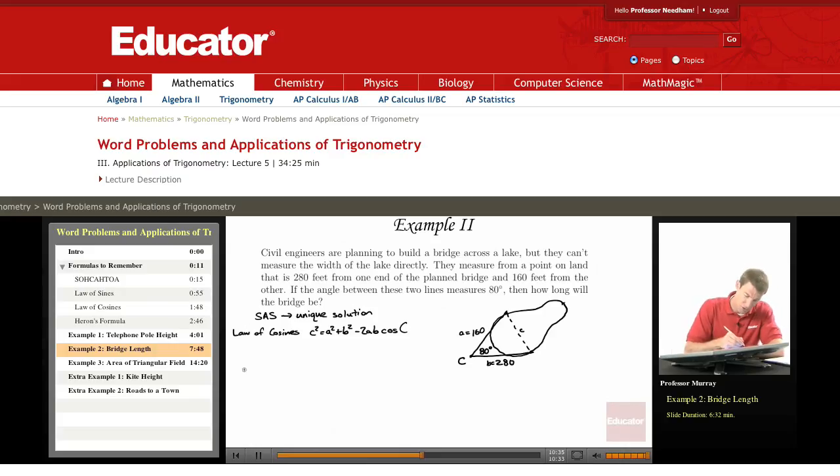So let me plug in. C squared, don't know that yet. A squared is 160 squared plus B squared is 280 squared minus 2 times 160 times 280 times the cosine of capital C. The angle is 80 degrees. I don't know exactly what that is, but I can find that on my calculator.